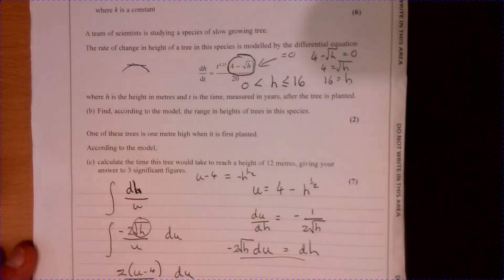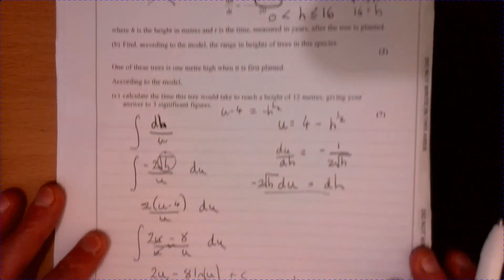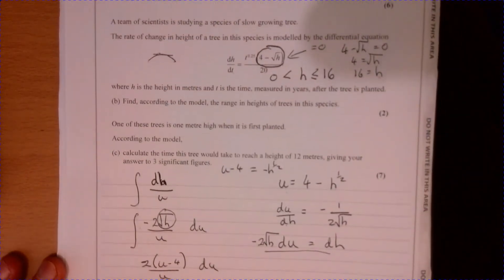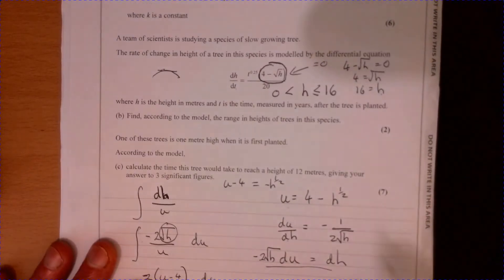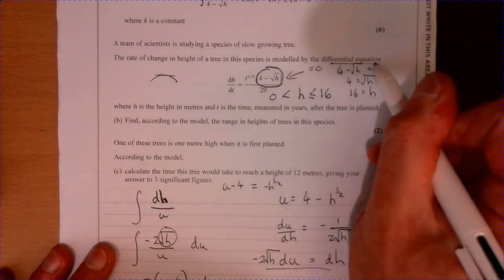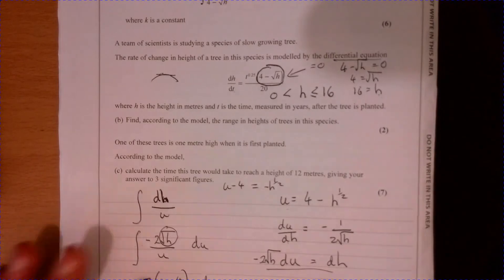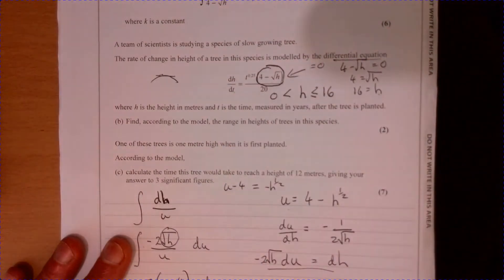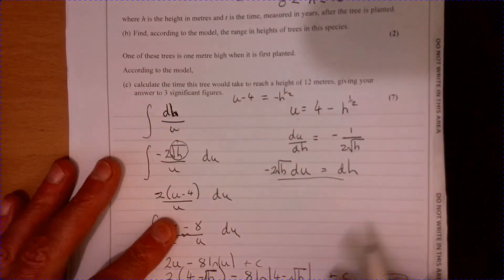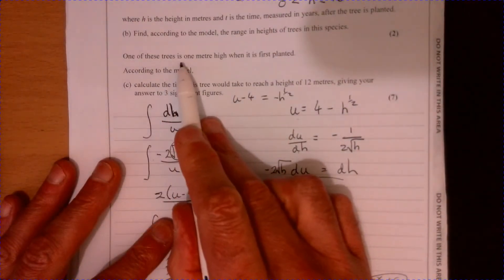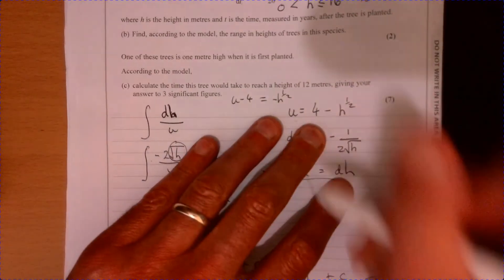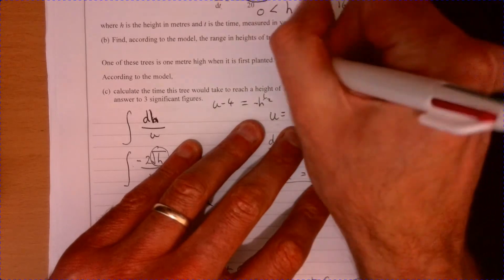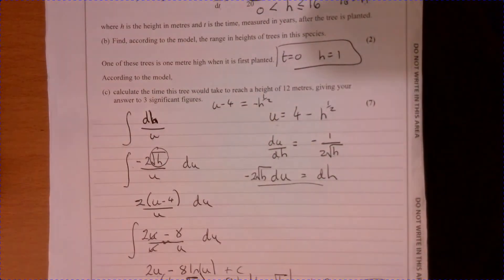Let's have a look at the last part of the question. Now there's another big clue here, it does talk about differential equation. So you need to know how to deal with differential equations. This is a differential equation. One of these trees is planted one meter high when it's first planted. So in other words, t is 0, h is 1. So we're going to have to come back to that bit of information.